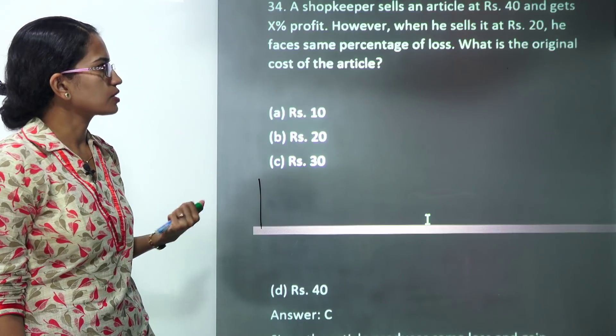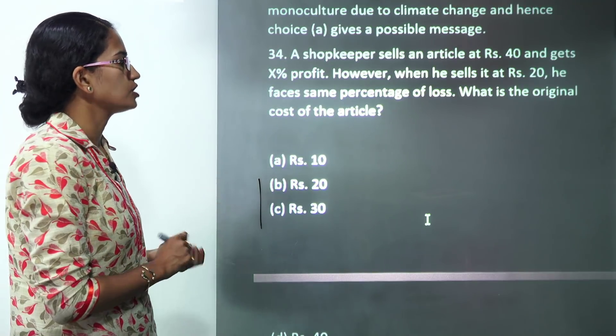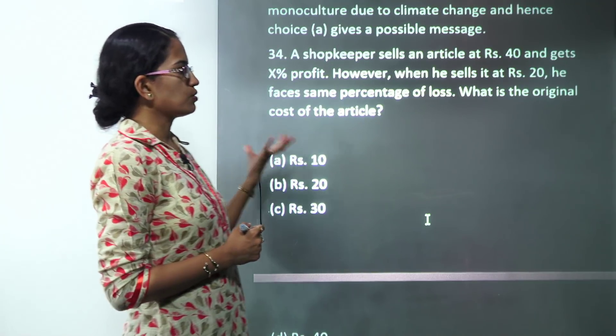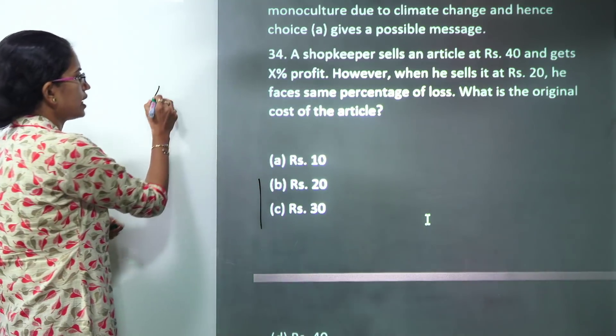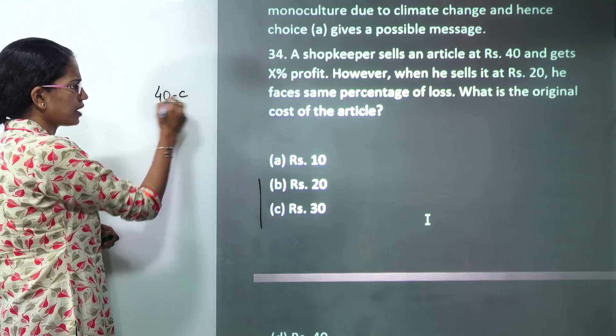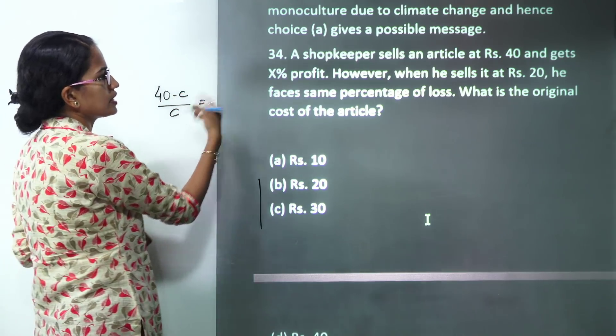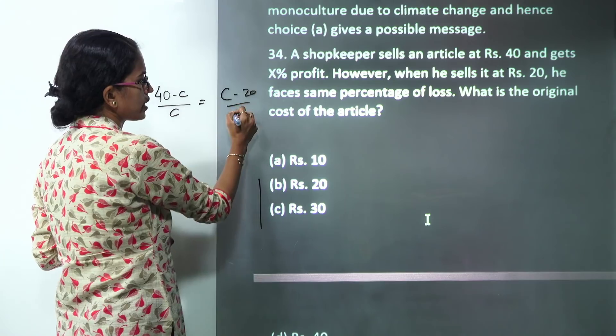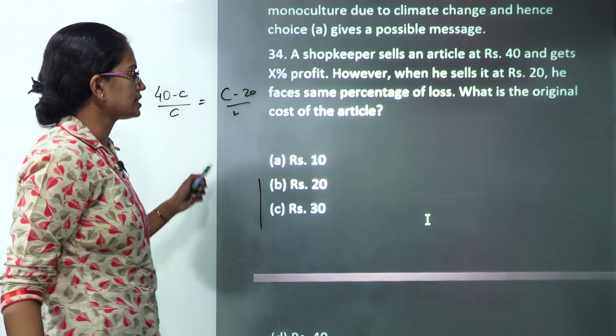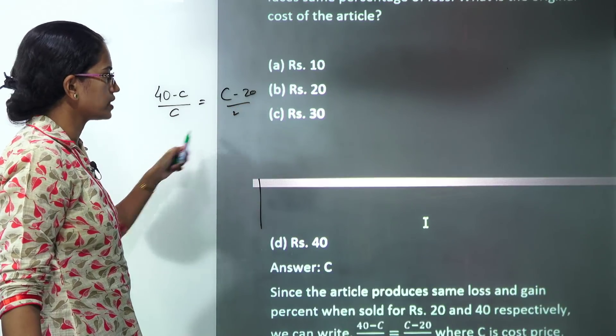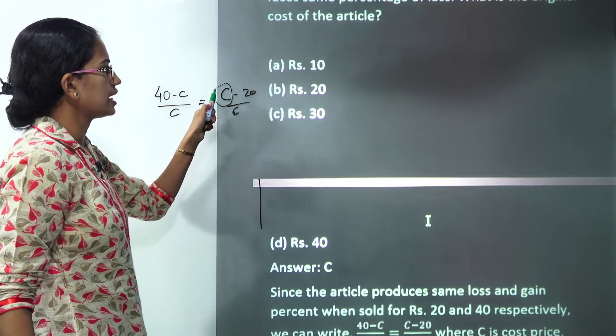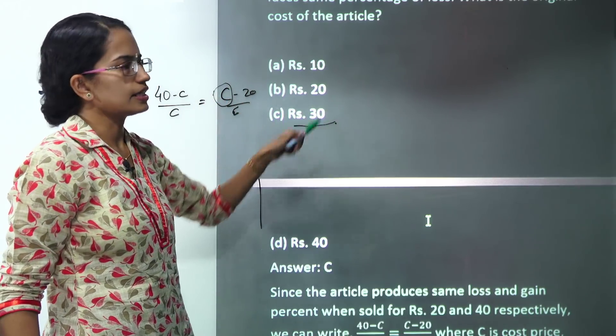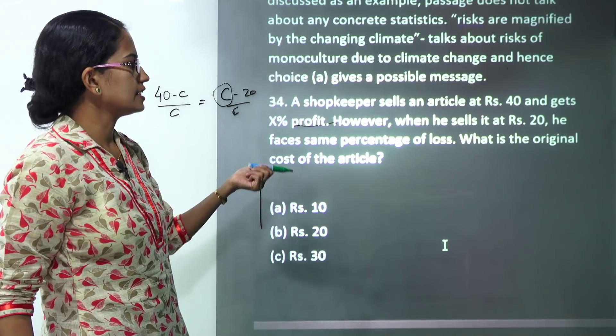Now comes the question on profit and loss. We have a shopkeeper who sells an article at 40 rupees and gets x percent of profit. So let's say when he is selling at 40 he has a cost price of C. However this is equated to the cost price of 20 when he is selling. So when I equate these two equations, I have to calculate the C and that would come out to be 30. So 30 would be the correct answer. So it's a kind of very direct question on profit loss.